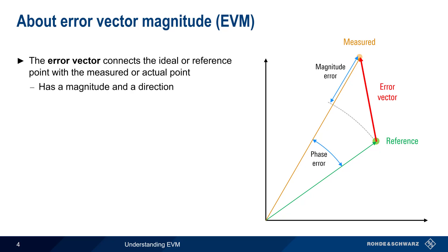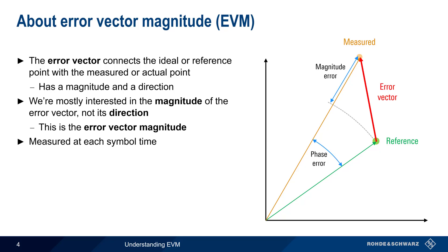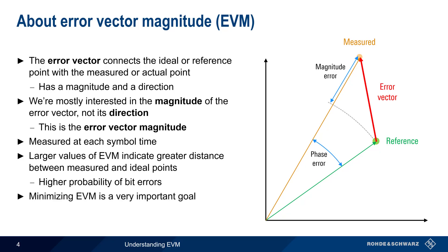Like all vectors, the error vector has both a magnitude and a direction. In digital signal modulation, we're mostly concerned with how far we are from the ideal point, not the direction to the ideal point, so the important measurement is the Error Vector Magnitude, or EVM. EVM is measured at each symbol time, and larger values of EVM indicate greater distance between the measured and ideal points. Greater distances mean a higher probability that the receiver will mistake one symbol for another, and thus higher EVM values mean a greater probability of bit errors. Minimizing EVM is therefore one of the most important goals in the design and operation of wireless data systems.